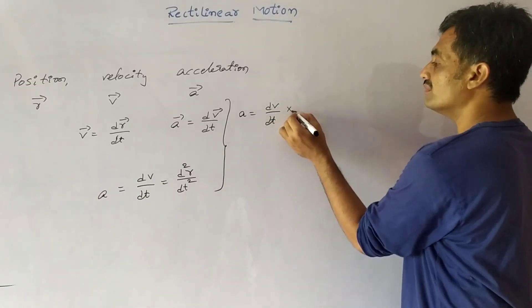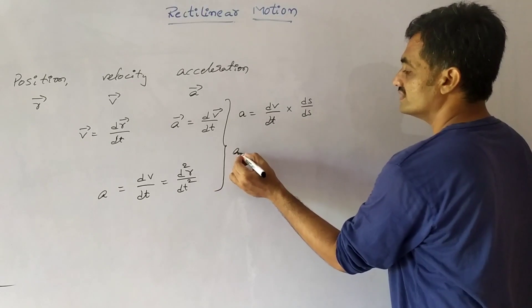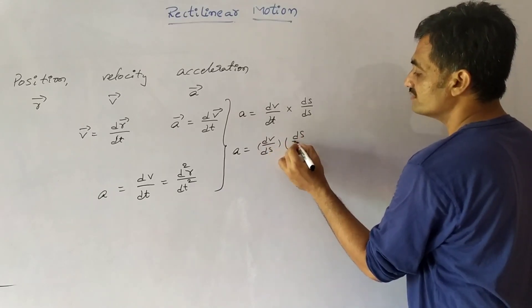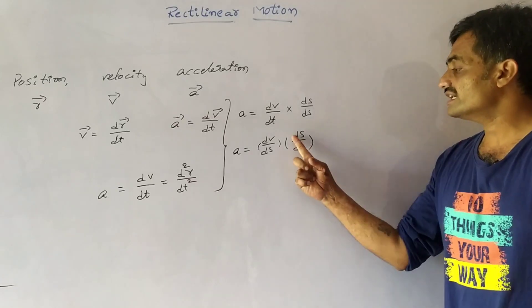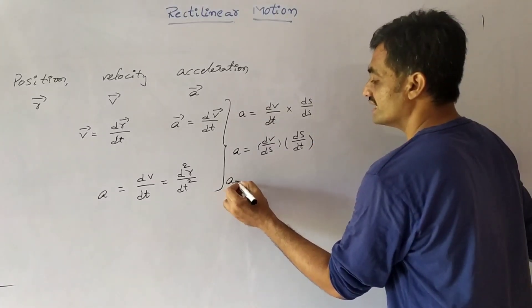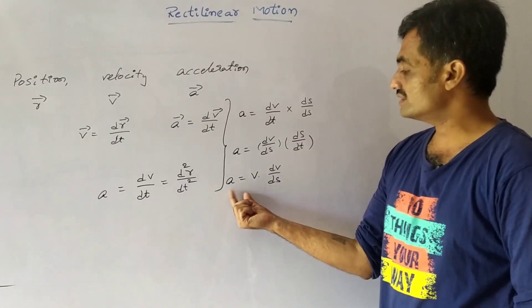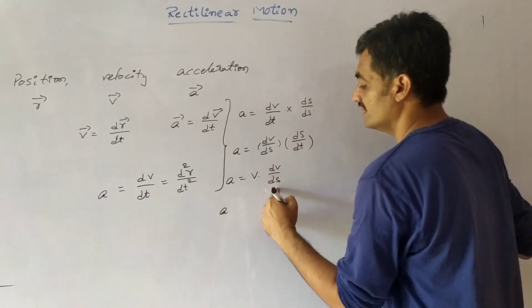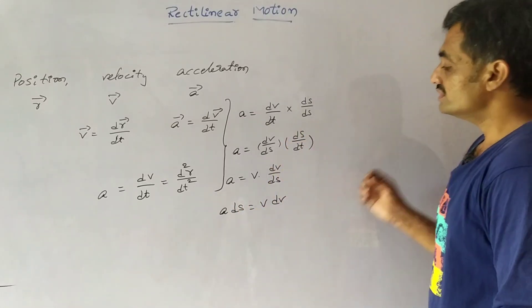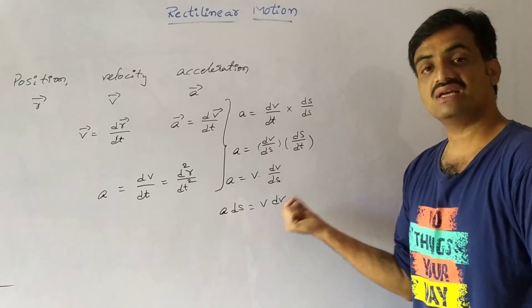So, a = v·(dv/ds). Cross-multiplying gives a·ds = v·dv. This shows the relation between acceleration and velocity based on change in displacement and change in velocity.